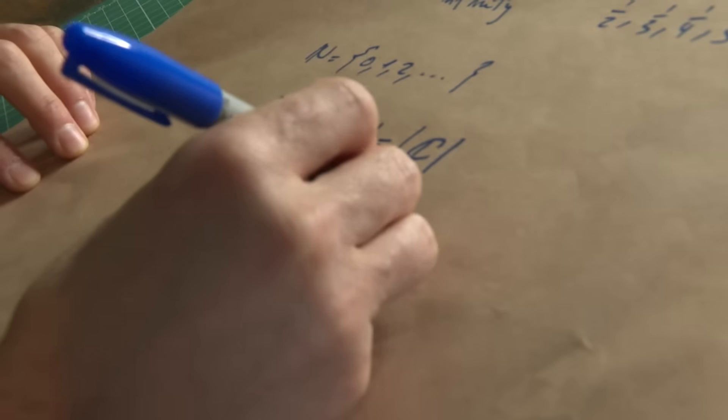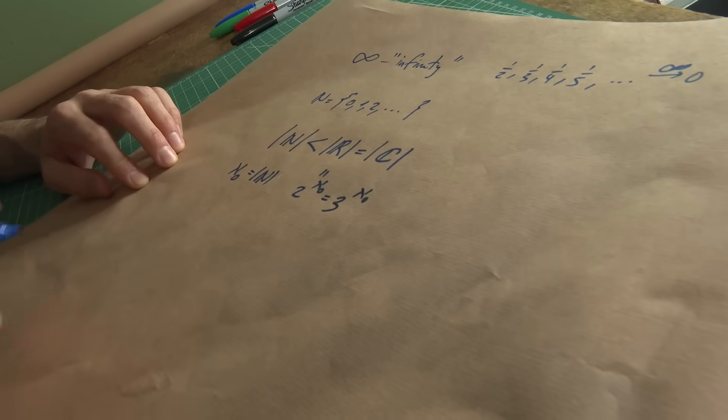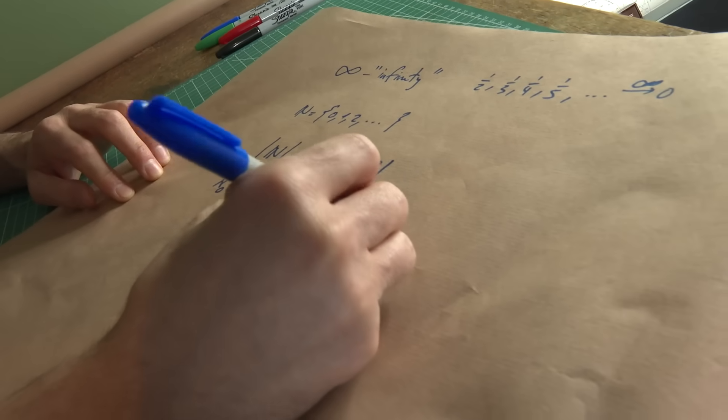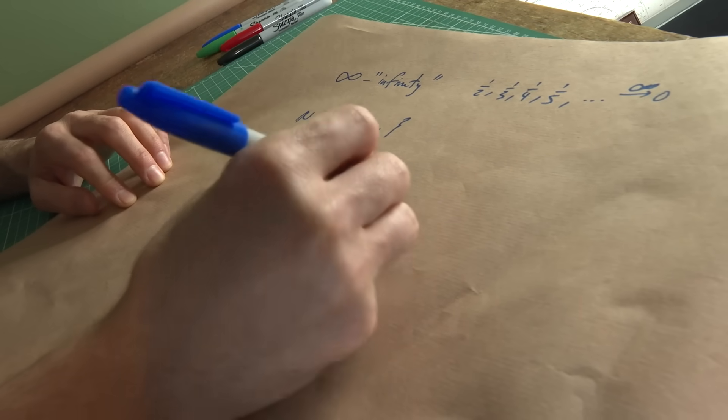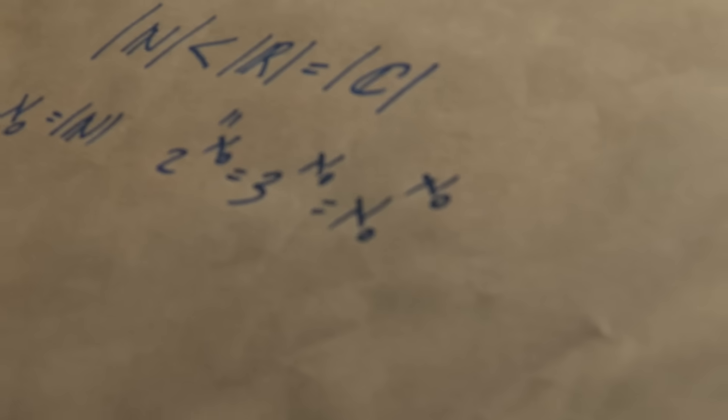Why 2? Well, it can be a lot of things, actually — it could be 3, or 4, or 5. It could also be Aleph-0 to the power of Aleph-0. All of those give you the same result. Why use 2, then? Just because it's the first such number.